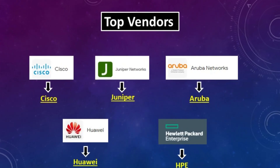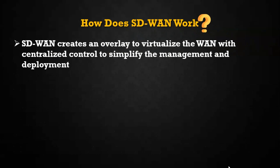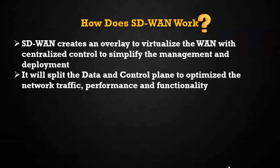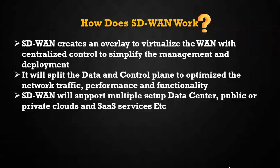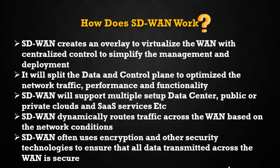SD-WAN supports multiple transport media such as MPLS, broadband internet, and LTE connections like 3G, 4G, and 5G. SD-WAN solutions are provided by multiple vendors like HPE Aruba, Versa Networks, Palo Alto, Cisco, Juniper, and others. SD-WAN creates an overlay to virtualize the WAN with centralized control to simplify management and network traffic. SD-WAN dynamically routes traffic across the WAN based on network conditions — for example, routing traffic across ISP links from region to region or country to country. SD-WAN also offers encryption and other security methods to increase WAN network security.